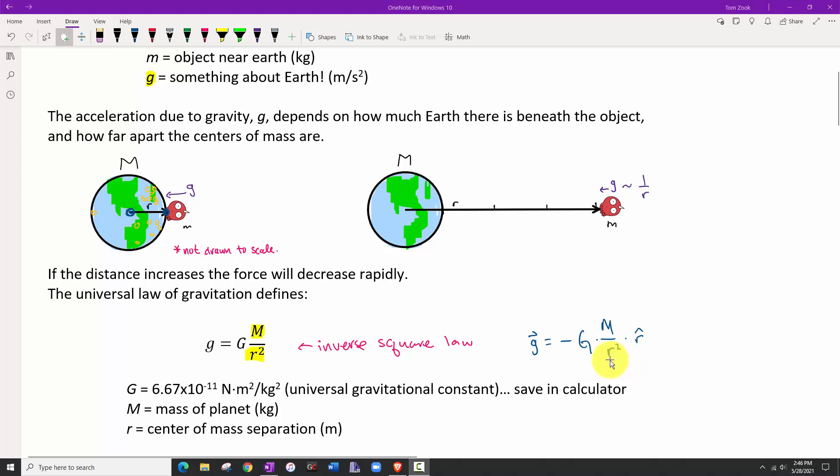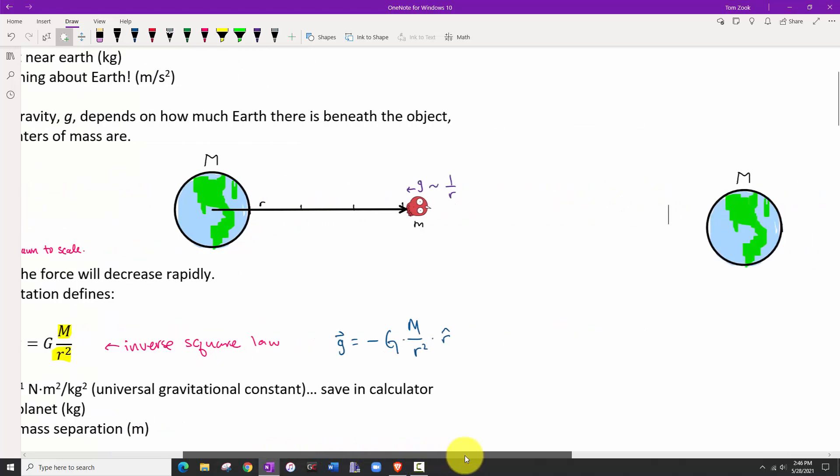Now a second point - this popped up in one class but not in the other. Okay, we get it, you get closer, the acceleration due to gravity increases. You get further away, it decreases. But what happens if you were to go inside the planet? Let's take a look at that real quick and explore that idea.